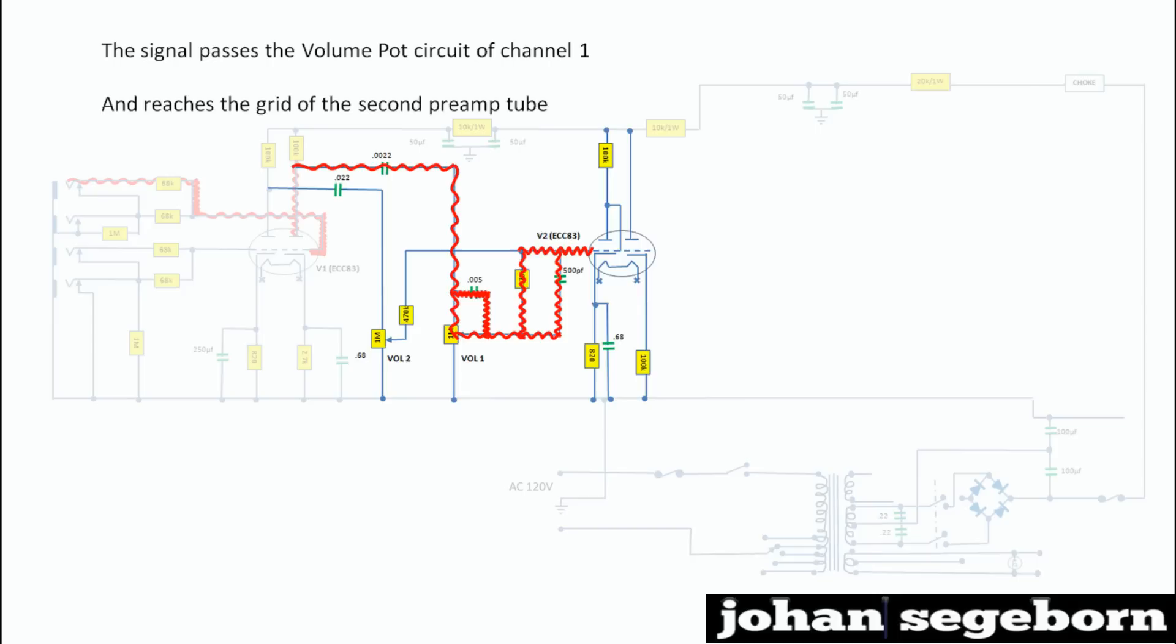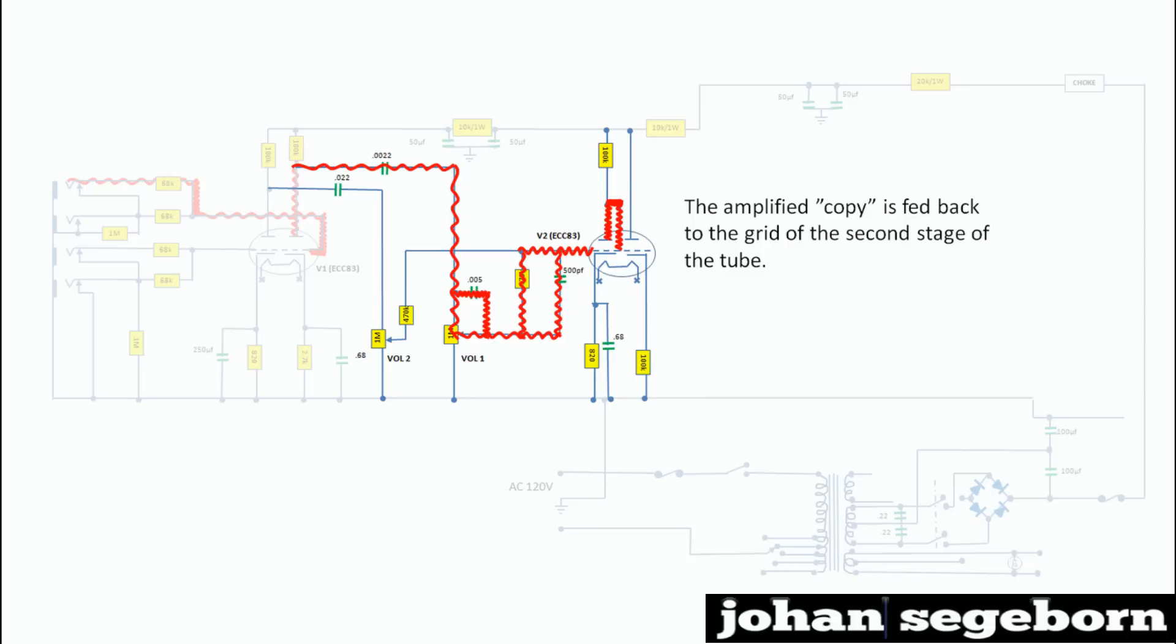And yet again, we have an amplified copy transmitted to the anode plate. And this amplified signal is then fed back to the grid of the second stage of the tube. And then you might expect that we amp the signal once again through the second stage. But no, when it's time for the tone stack,